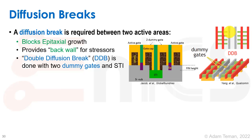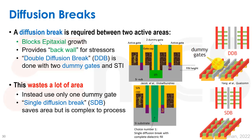The basic approach when starting with a new process is to use a double diffusion break: one dummy poly for the right transistor, nothing in the middle, and another dummy poly for the left transistor. The problem is it wastes a lot of area. As processes mature, fabs find ways to enable a single diffusion break. It makes the process harder and hurts yield, but it saves so much area that it's commonly done. Most standard cell libraries will now have a single diffusion break. However, this often doesn't appear in early process versions, and some companies may prefer the double diffusion break to improve yield.